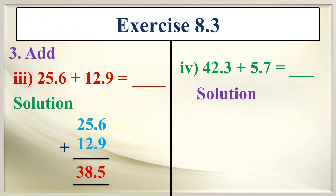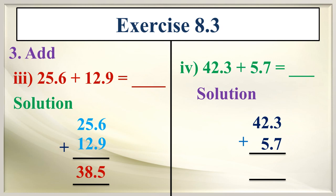And 42.3 plus 5.7 equals dash. Write the decimals in vertical position: 42.3 and 5.7. Now add these two decimals. 42.3 plus 5.7 — what is the answer? That is 48.0.